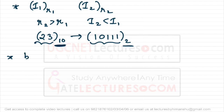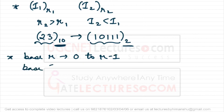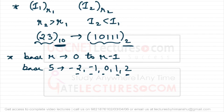The second point: we've learned that a number system with base r has digits from 0 to r-1, but it is not necessary that a question will always give digits from 0 to r-1. For example, in a base-5 system with 5 unique symbols, a designer may choose the symbols as -2, -1, 0, 1, 2 instead of 0, 1, 2, 3, 4, and may even represent these as A and B.